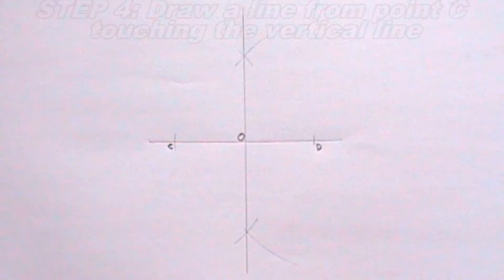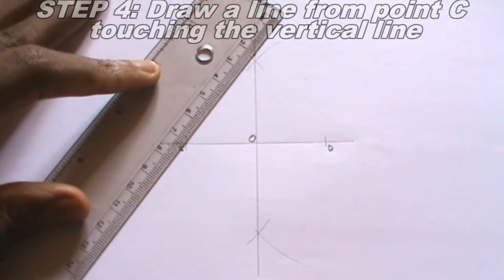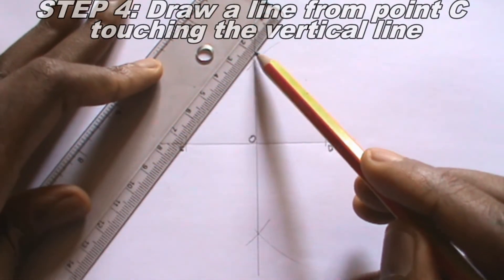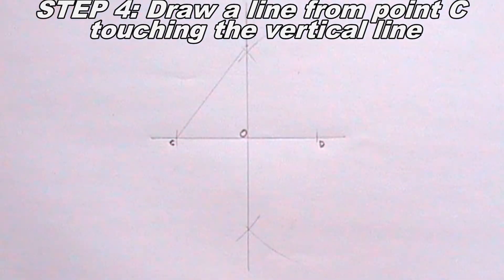The next step I will take is to draw a line from point C touching the vertical line. Now I will label the point where the line I drew from point C touches the vertical line A.